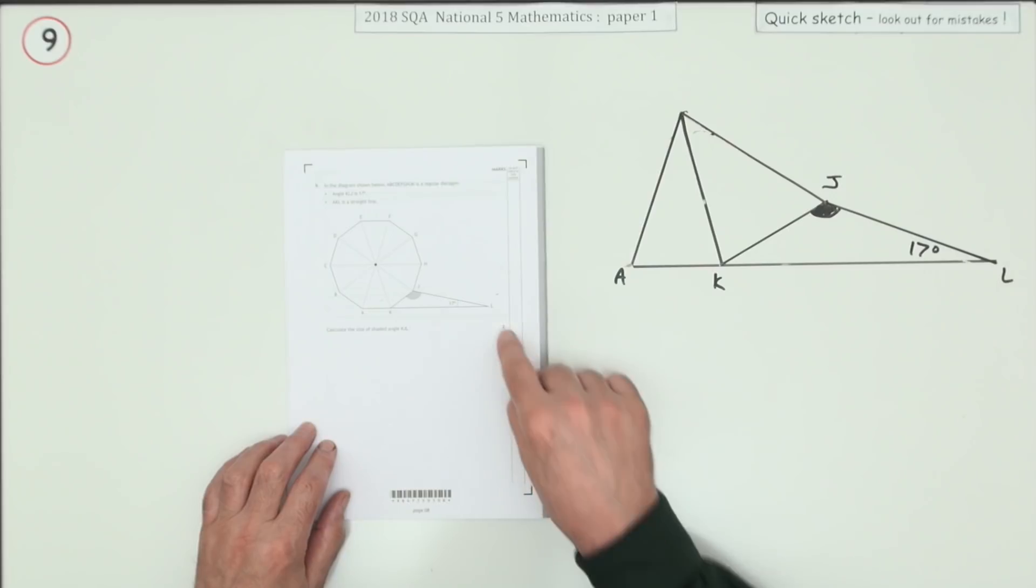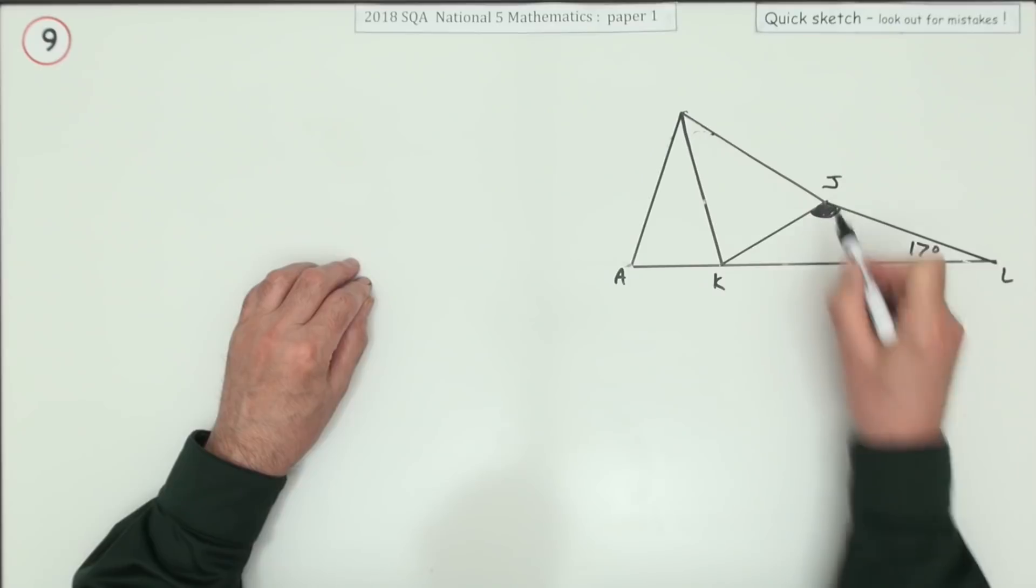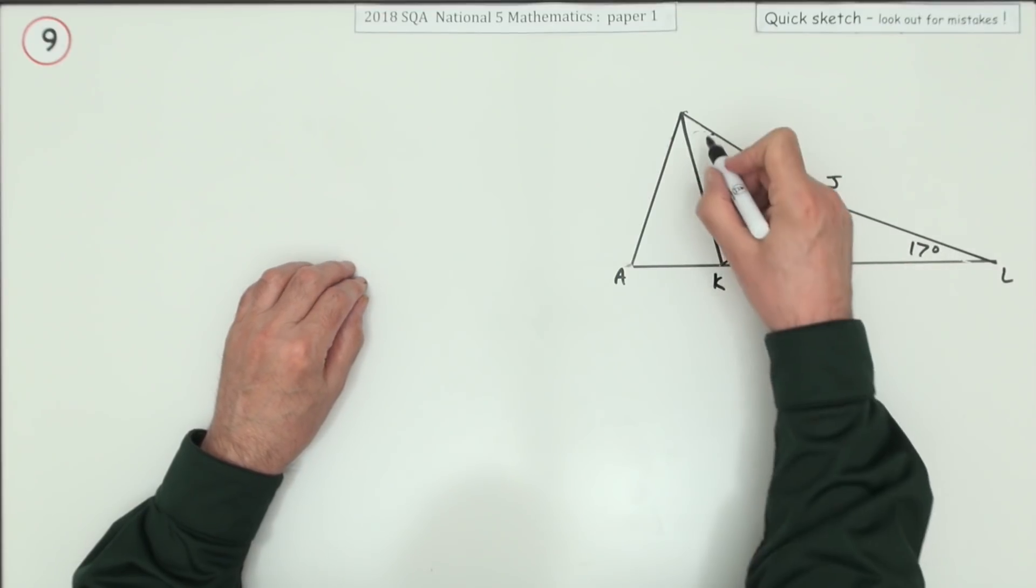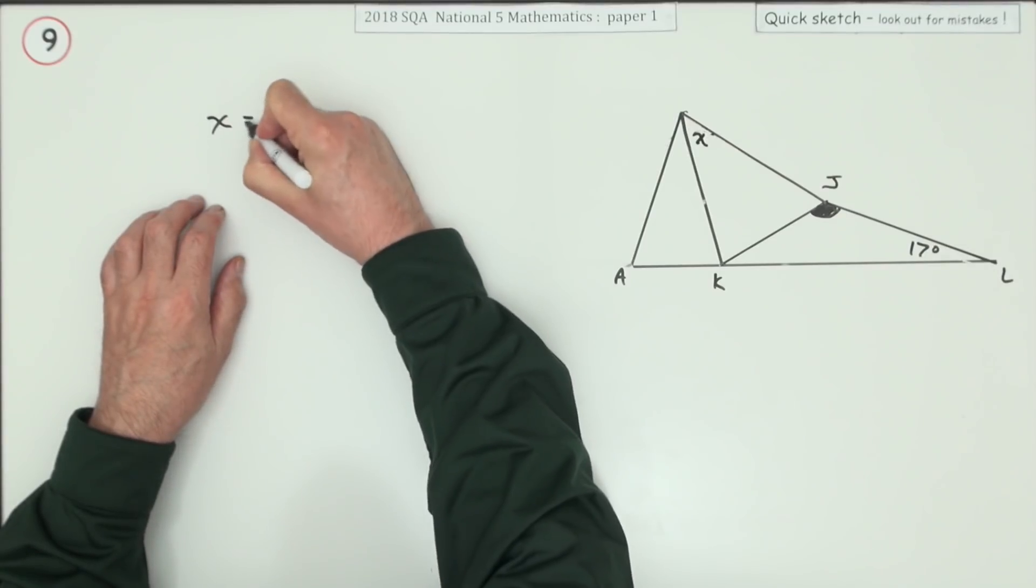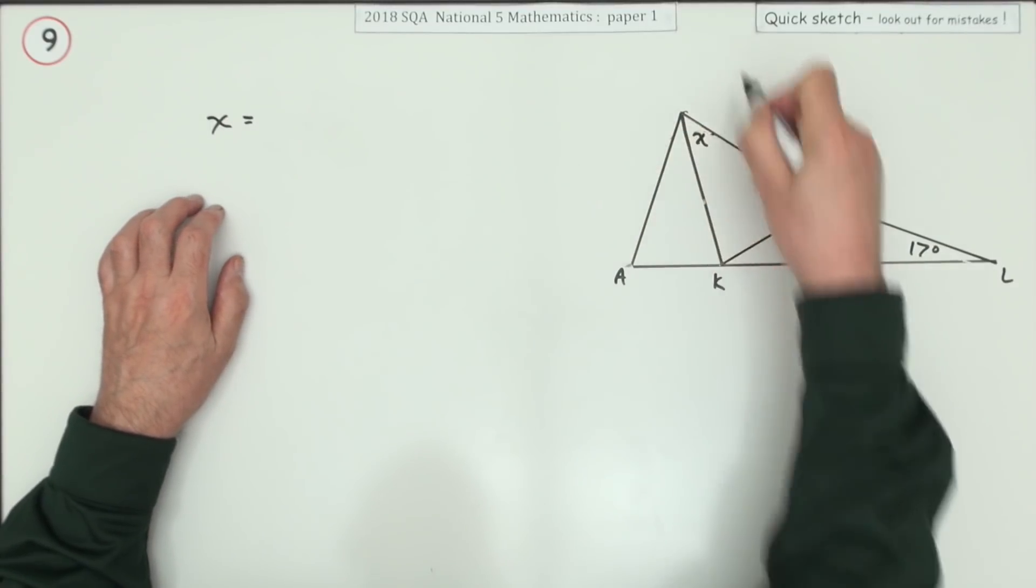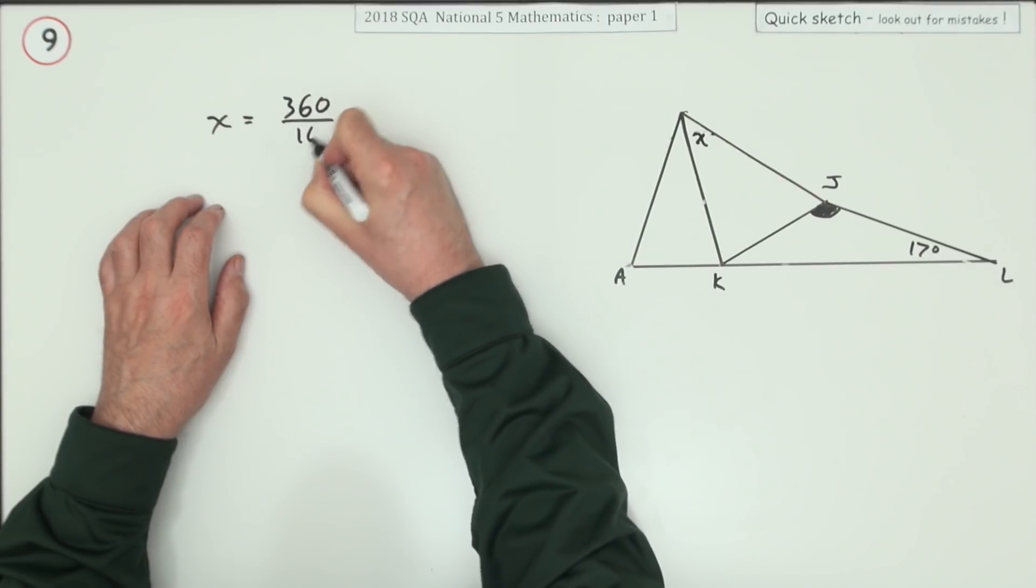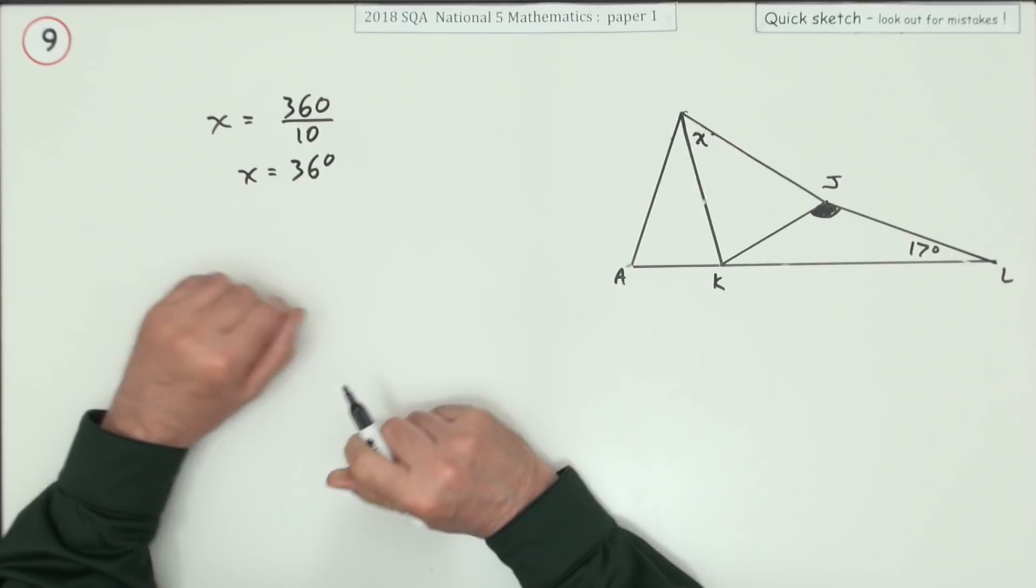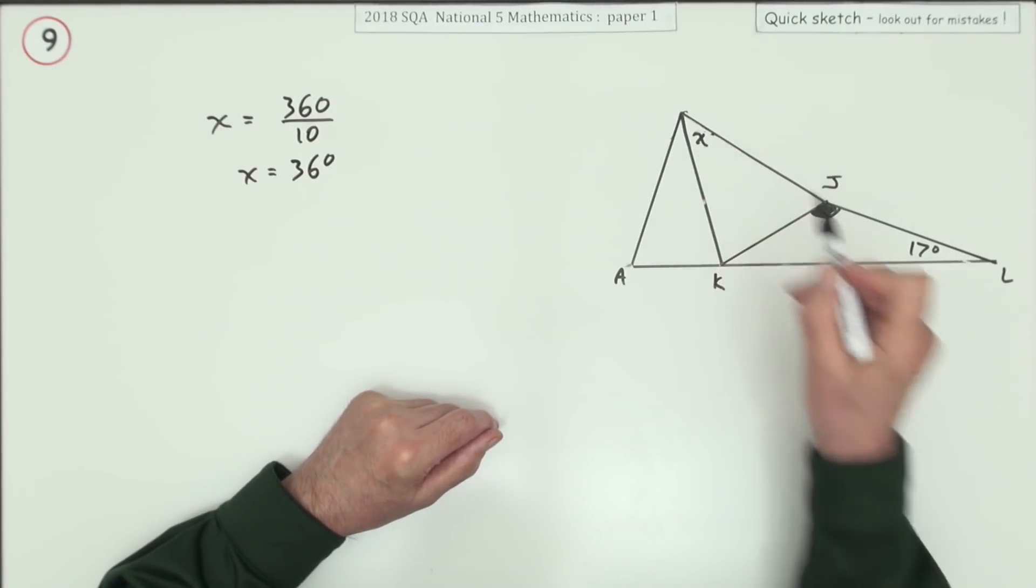Now it's only for two marks. Rather than name angles via their vertices, I'm going to call that angle x. That'll be the first thing to find out. If there's ten of them sharing 360 degrees, then each of them will have 360 divided by 10, which will be 36 degrees. This angle is 36 degrees.